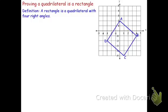A rectangle is a quadrilateral with four right angles. Now, in order to prove that we have right angles, we're going to have to show some work here.